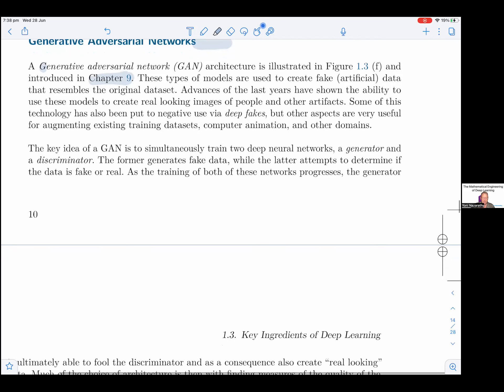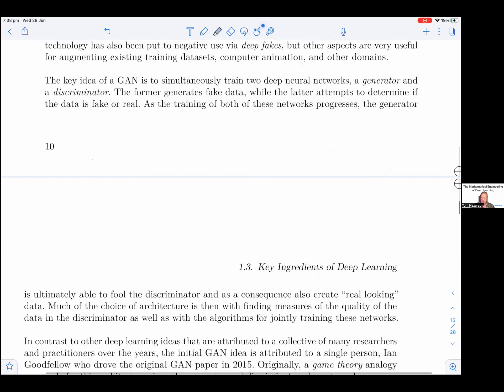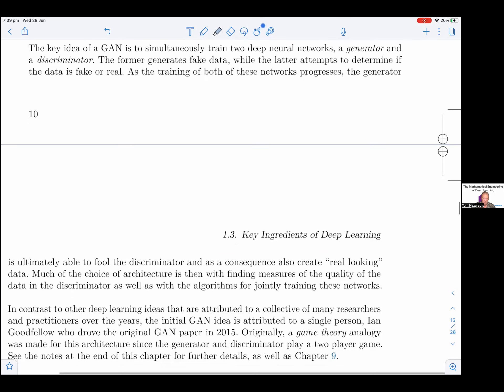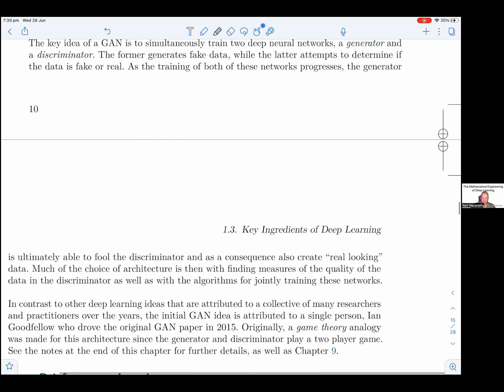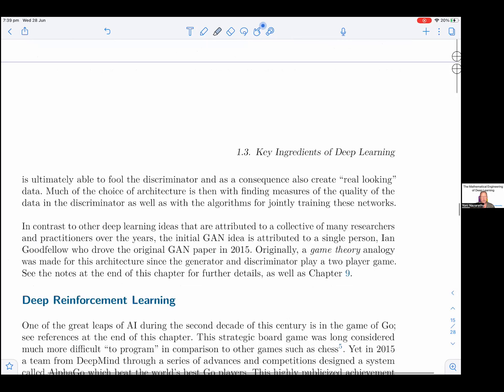The key idea of a GAN is to simultaneously train two deep neural networks, a generator and a discriminator. The former, namely the generator, generates fake data, while the latter, namely the discriminator, attempts to determine if the data is fake or real. As the training of both of these networks progresses, the generator is ultimately able to fool the discriminator and as a consequence also create real-looking data.